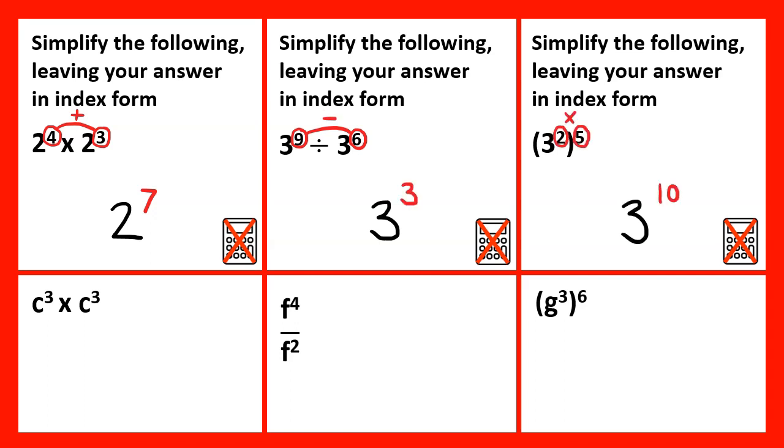These rules do not only work when the base number is numerical but also work when they are written as algebraic expressions. So for this one, the base number will remain as C, and using the same rule as before, 3 plus 3 would be C to the power of 6.